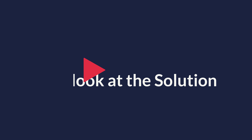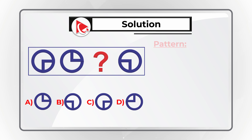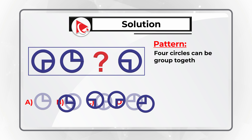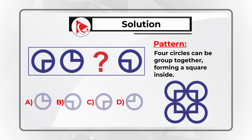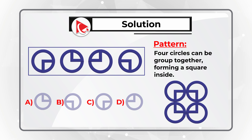I am moving forward to share my version of the solution. As you might have noticed, there is a set of lines inside the circles, and four circles can be grouped together forming a square inside. So the correct choice is choice D.